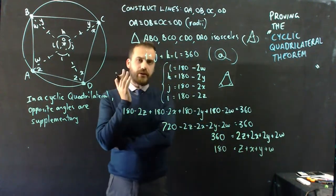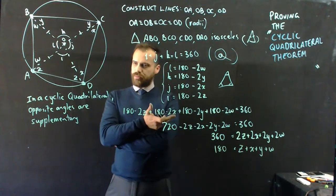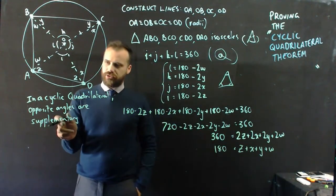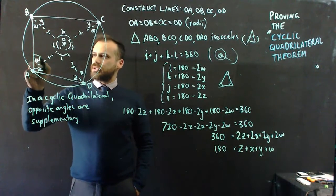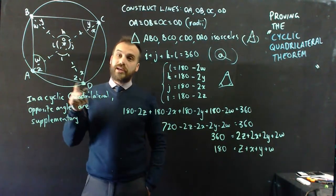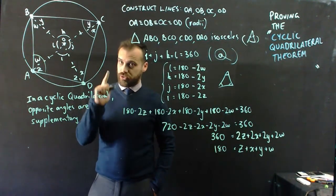Now, believe it or not, we are pretty much done. Now, remember what we're trying to prove. We're trying to prove that opposite angles are supplementary, right? So we're trying to prove that this angle, which is WZ, and this angle, YX, add together to make 180. That's what we're trying to prove.